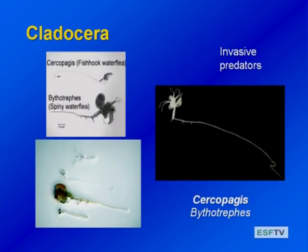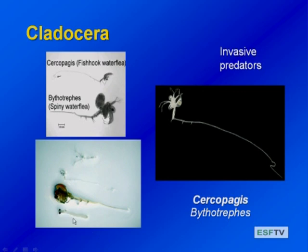We also have some exotic predatory cladocerans that have come into the New York region, Great Lakes, and Finger Lakes. We have the fishhook flea Cercopagus, which is a predatory cladoceran with a long tail spine and a hook on it, with a little brood sack with a resting egg. There's also a bigger one in the Great Lakes, Bythotrephes, compared here to native Leptodora and a larval alewife for scale. These exotic species are really big, really spiny, and very different from our native Leptodora. When we get to the invasive section, we'll be talking about these guys.